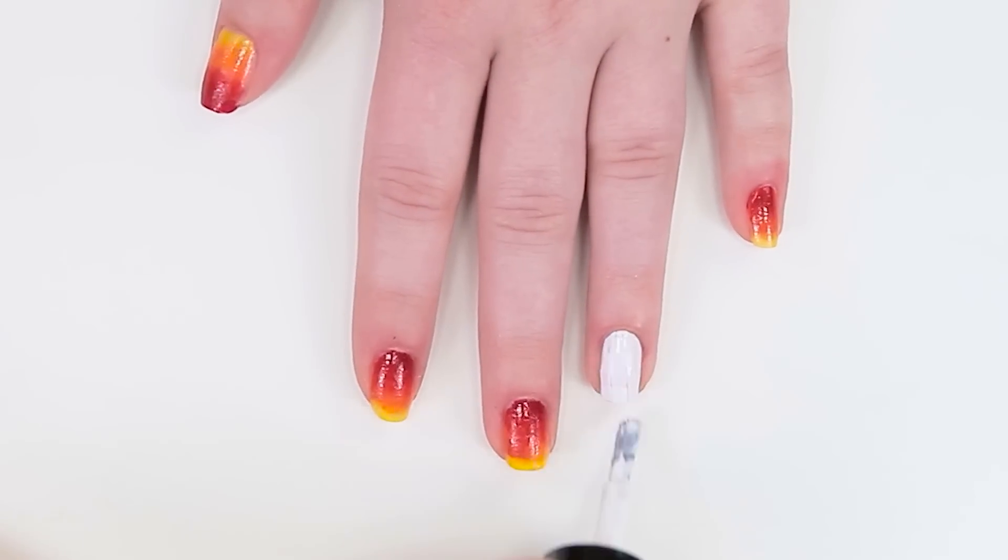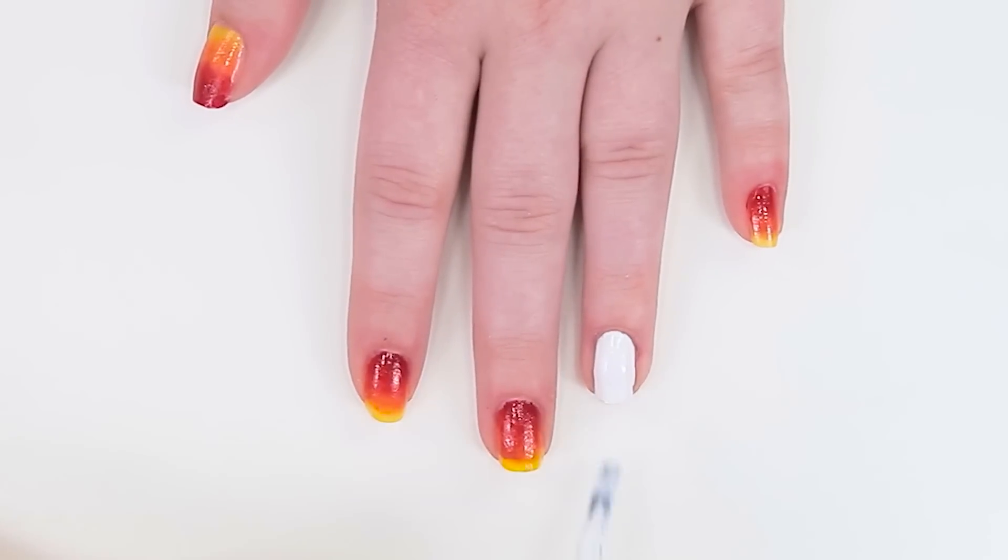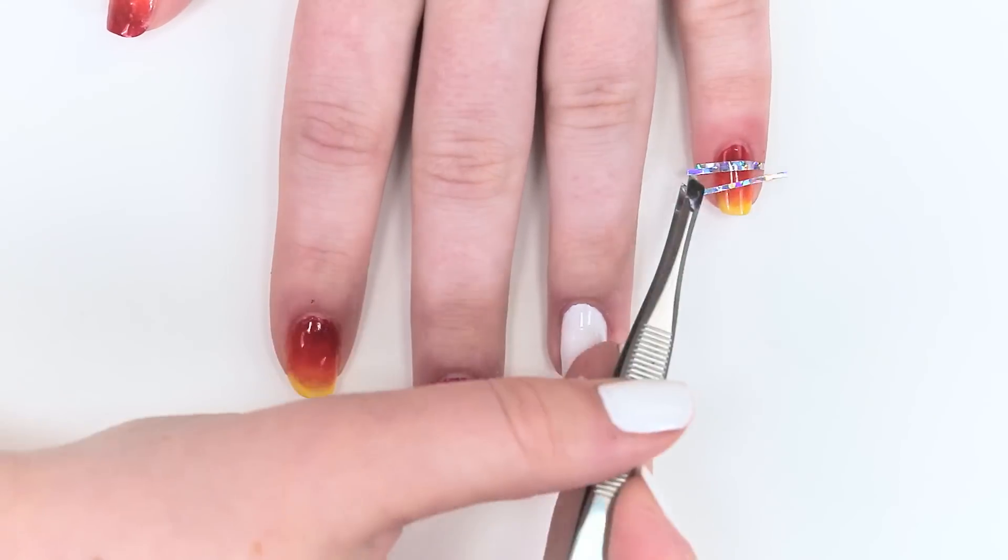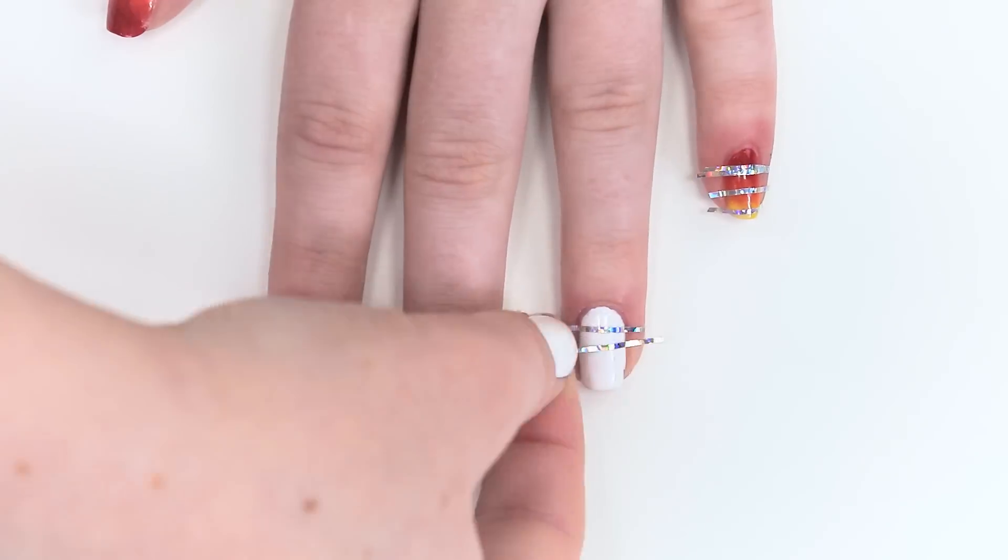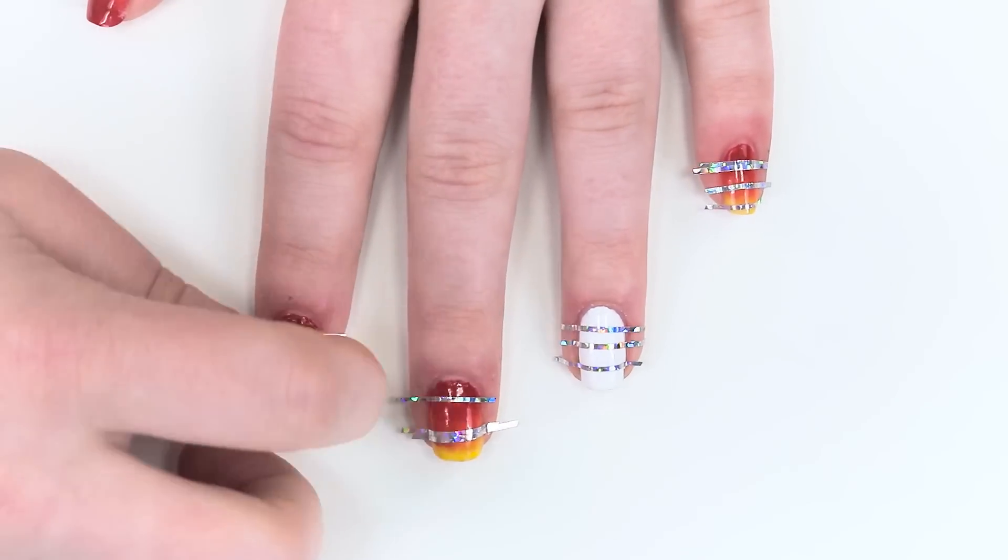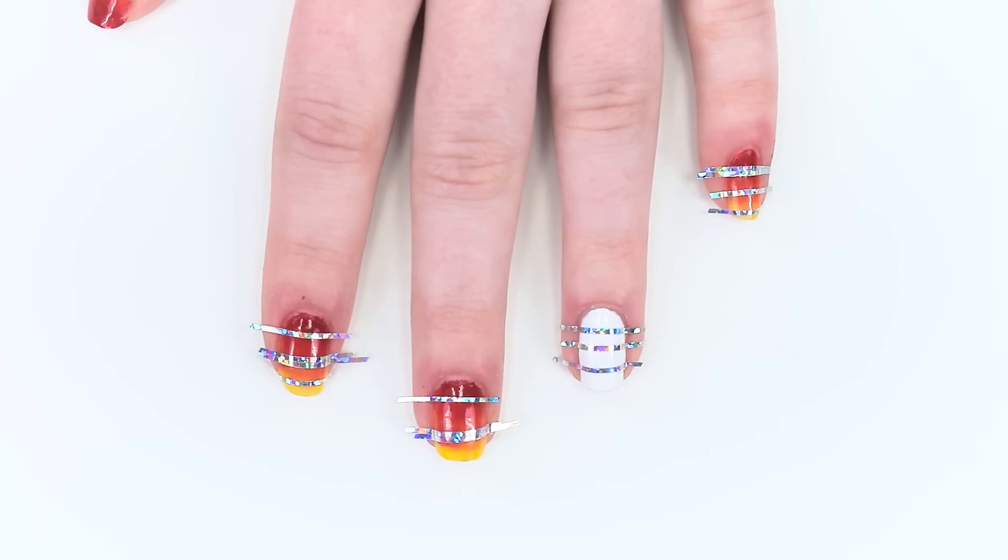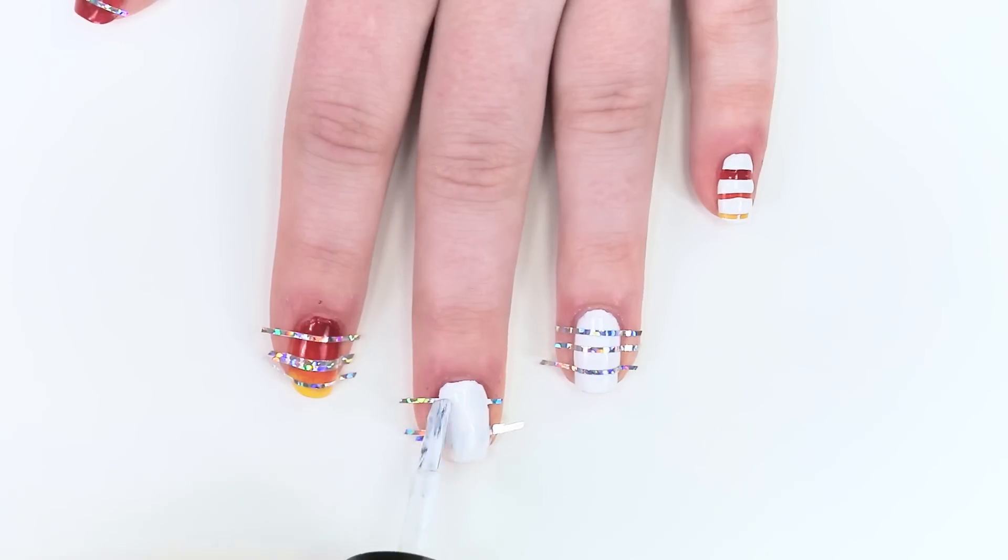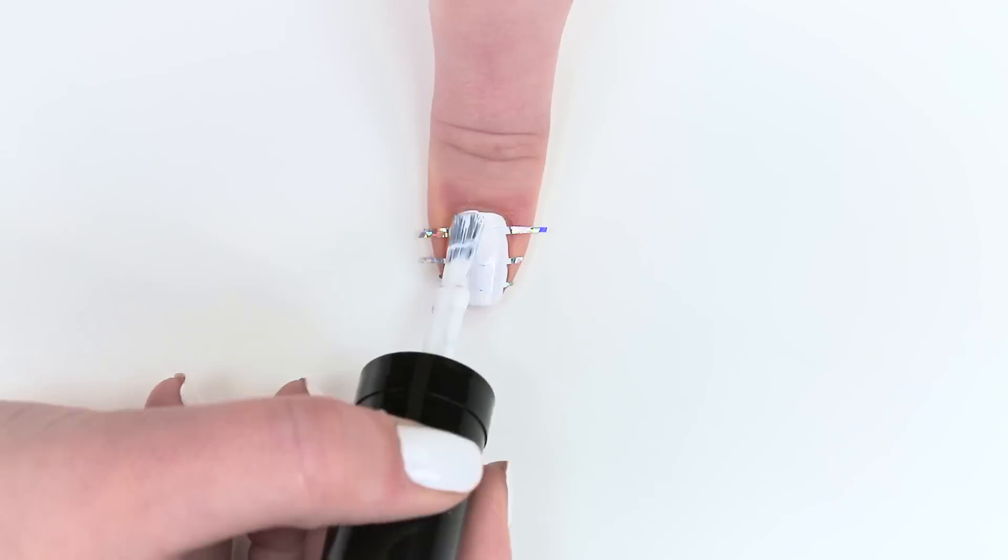For the inverted accent nail, paint two coats of white on your ring finger. Once the base color is dry, randomly place striping tape exactly where you'd like the ombre colors to show through. Cover the entire nail with white polish and remove the striping tape before it fully dries.